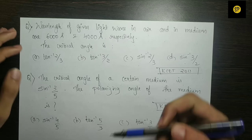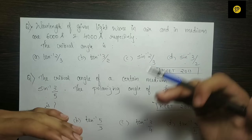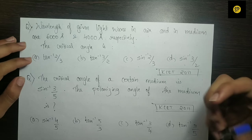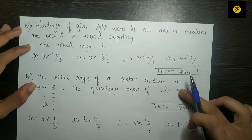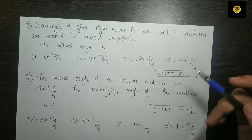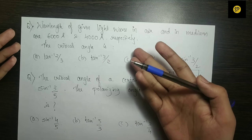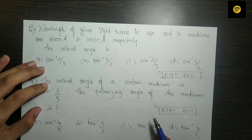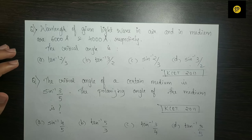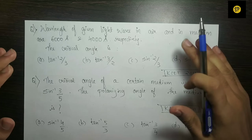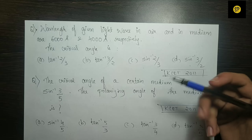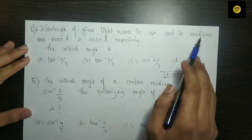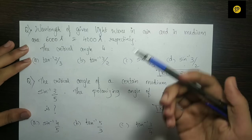I can solve a couple of related questions here. The wavelength of a given light wave is 6000 angstroms in air and 4000 angstroms in a medium. We need to find the critical angle.